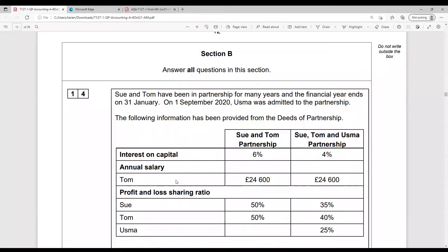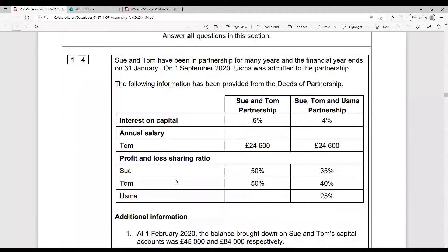I'm going to take a look at this question now, Sue and Tom. It's a partnership question that was in the 2021 paper, the AQA 7127-1. Sue and Tom have been in partnership for many years. Their financial year ends on the 31st of January. And on the 1st of September 2020, Usma is coming into the partnership. They've given us some information here. They've got deeds of partnership. That means there is a partnership agreement, so we don't have to worry about the Partnership Act of 1890.